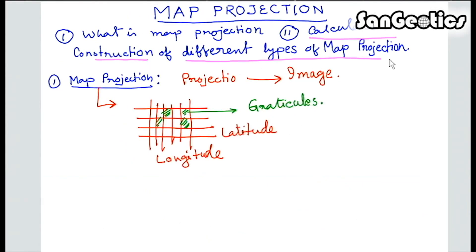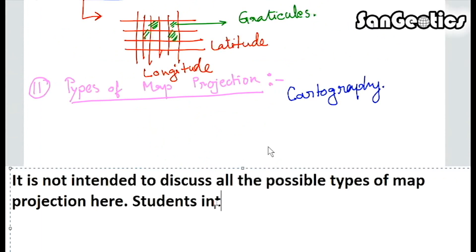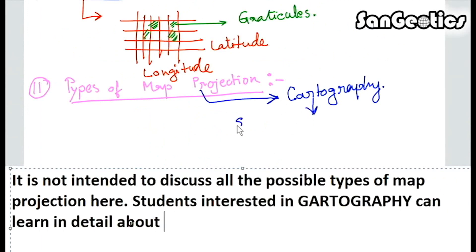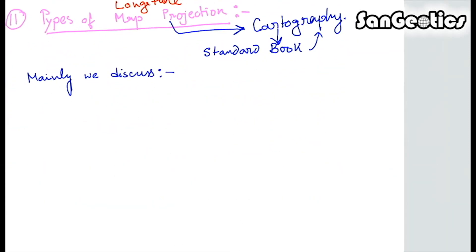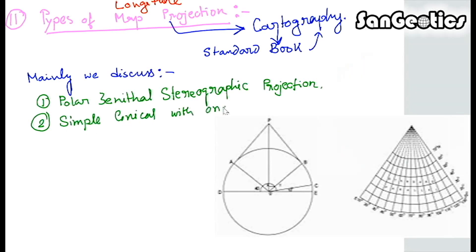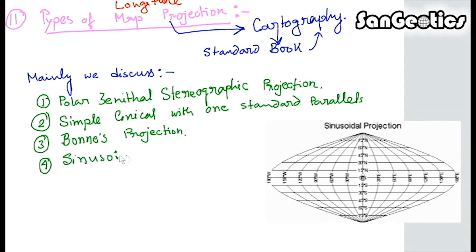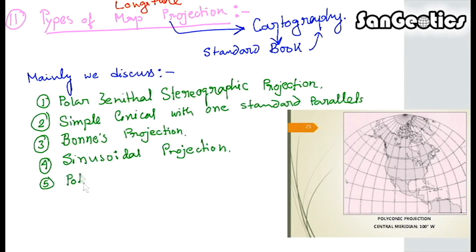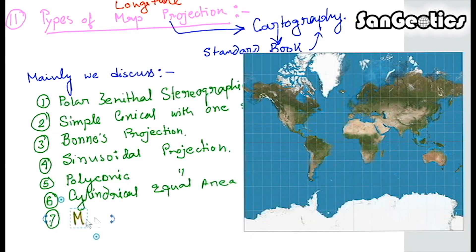Second, calculation and construction of map projection. It is not intended to discuss all possible types of map projection here. Students interested in cartography can learn in detail about map projection from any standard book on cartography. In this series, we mainly calculate and construct: 1. Polar Zenithal Stereographic projection, 2. Simple Conical with one standard parallel, 3. Bonne's projection, 4. Sinusoidal projection, 5. Polyconic projection, 6. Cylindrical Equal Area projection, 7. Mercator's projection.